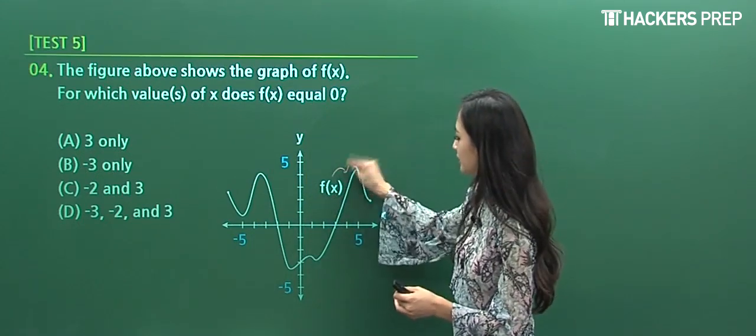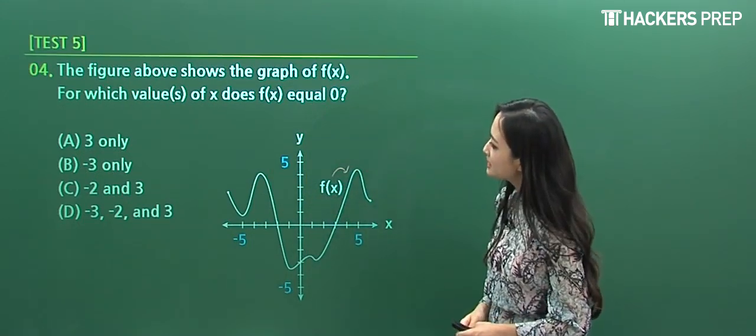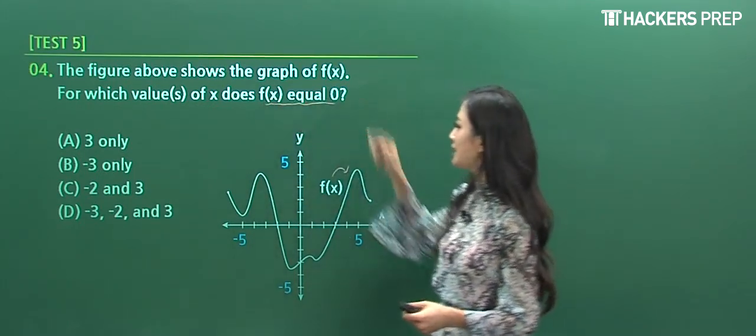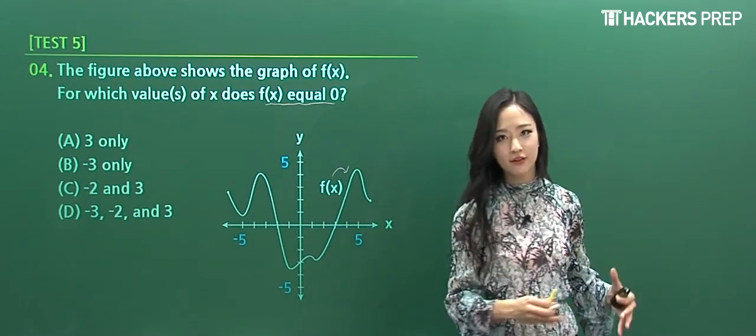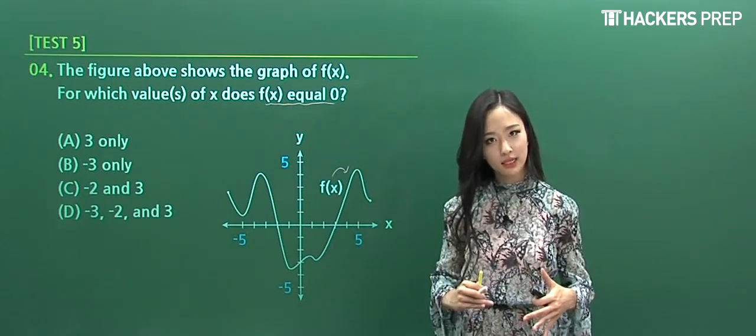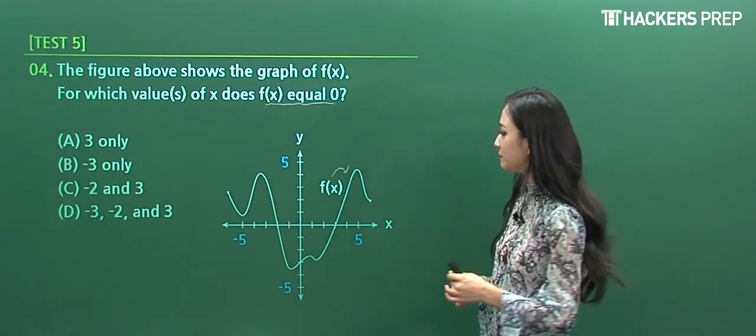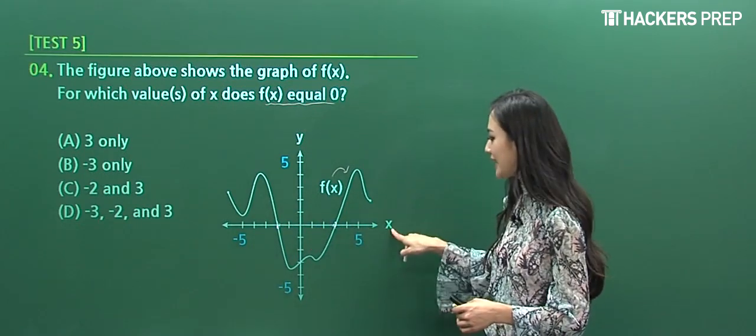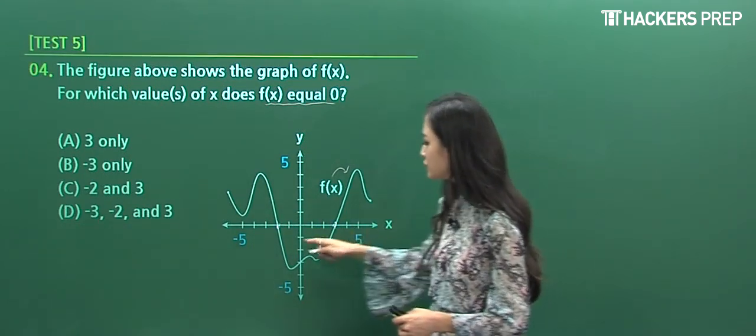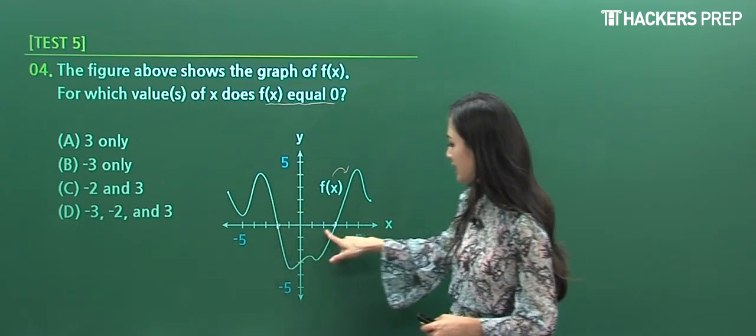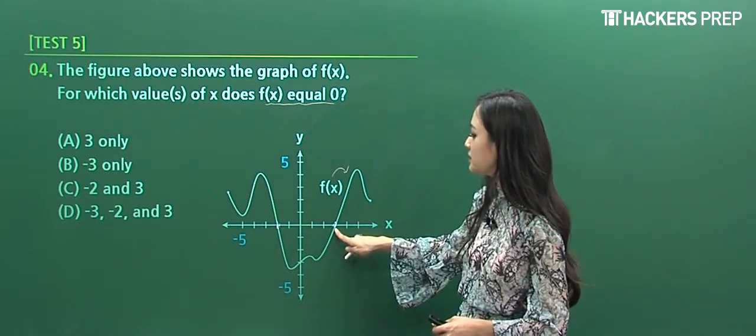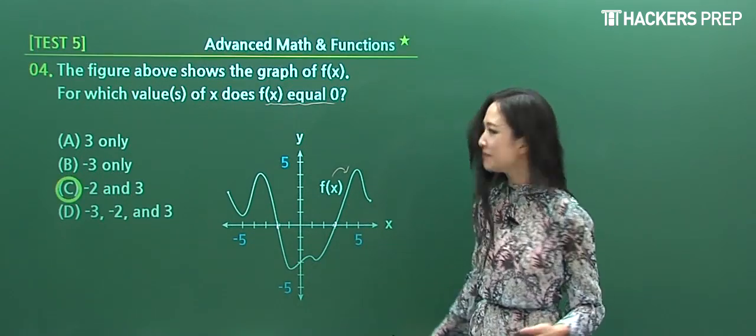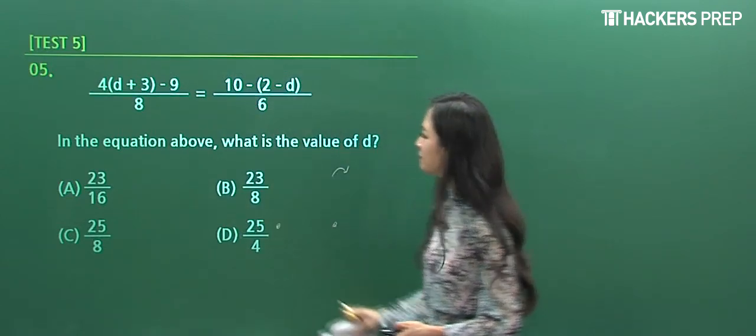Number four: the figure shows the graph of f(x). For which value of x does f(x) equal zero? It's important to know what this expression means. What does it mean for a function to have a value equal to zero? It simply means meeting the x-axis. When we look at the entire curve, two points meet the x-axis: x equals negative two and x equals positive three. The answer choice that has both of those is C.